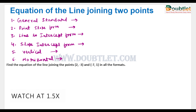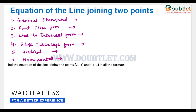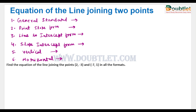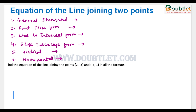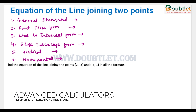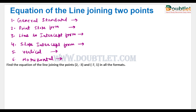Hello everyone, welcome to Doubtlet. In this new video we will learn about the various forms of a line joining any two points. There are six various forms of a line that we will one by one deal with and understand what equation represents them. The first form is the general standard form, which can be written as ax plus by equals c, a linear equation where a, b, and c are constants and x and y are variables.